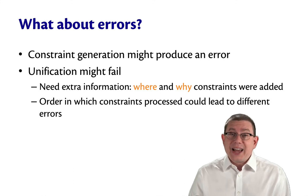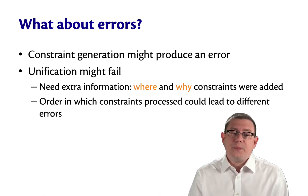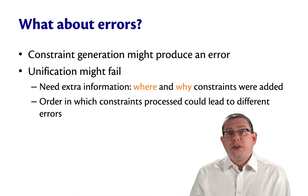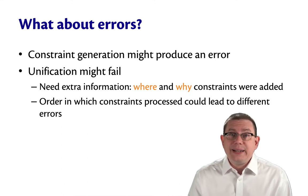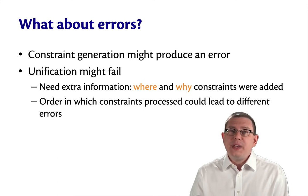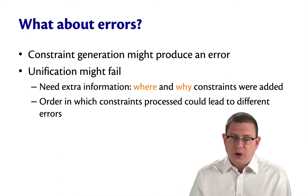It needs extra information that we haven't been tracking so far. It needs to record information about where and why constraints were added so it can go back and tell the programmer, hey, it was on this line and column of your source code that a problem really occurred.